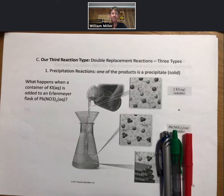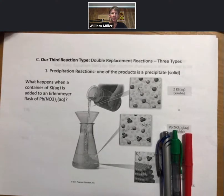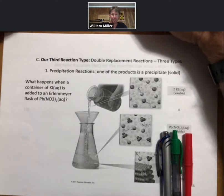The first subtype of this is going to be called a precipitation reaction. One of the products is a precipitate, a solid. So the first example we want to do is to talk about what happens when a container of potassium iodide is added to an Erlenmeyer flask of lead nitrate. In fact, we're going to be doing it slightly differently. We're going to add lead nitrate in the video that I'm showing here.